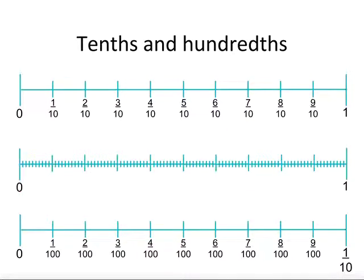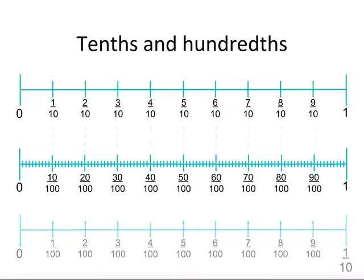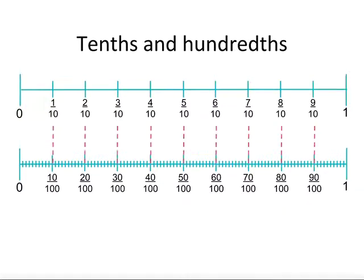Because each tenth has 10 hundredths, then 2 tenths is the same as 20 hundredths, 3 tenths is the same as 30 hundredths, 4 tenths is 40 hundredths and so on. You can see each equivalent fraction is its multiple of 10.